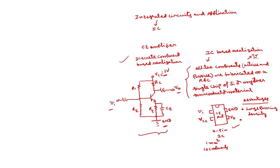The second advantage is that IC-based realization is more reliable because we eliminate soldering connections. In discrete component realization, soldering connections are used, which may sometimes result in errors. In ICs, that type of error is not possible because soldering connections are eliminated.